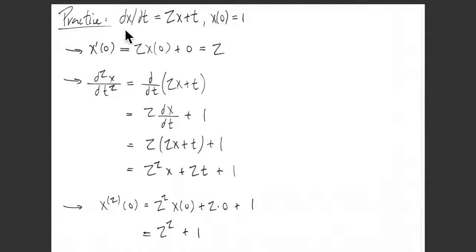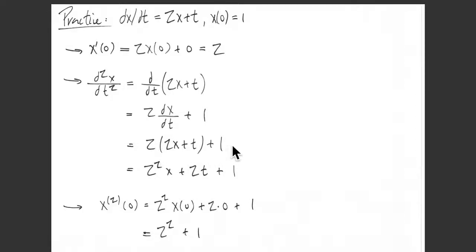For subsequent derivatives we have to do a little more work by differentiating the ODE. The second derivative is the derivative of x' = 2x + t, so we get 2(dx/dt) + 1. Since dx/dt = 2x + t from the IVP, multiplying through gives 2²x + 2t + 1. Plugging in t = 0 with x(0) = 1 gives us 2² + 1 = 5.